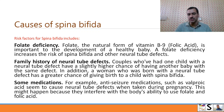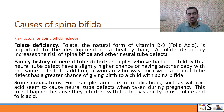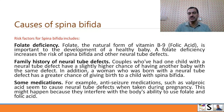The second risk factor is family history of neural tube defects. Couples who have had one child with a neural tube defect have a slightly higher chance of having another baby with the same defect. A woman born with a neural tube defect also has a greater chance of giving birth to a child with spina bifida. Additionally, some medications — such as anti-seizure medications like valproic acid — can cause neural tube defects when taken during pregnancy, possibly because they interfere with the body's ability to use folate and folic acid.